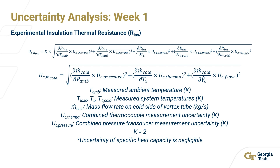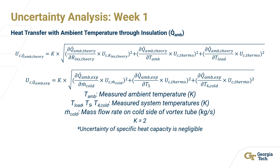These are the uncertainty equations for heat transfer between the load and the ambient temperature outside through the insulation. Here, it uses the combined uncertainty of the mass flow rate, which means it varies with the flow rate of the air. The thermocouple uncertainty is also involved.